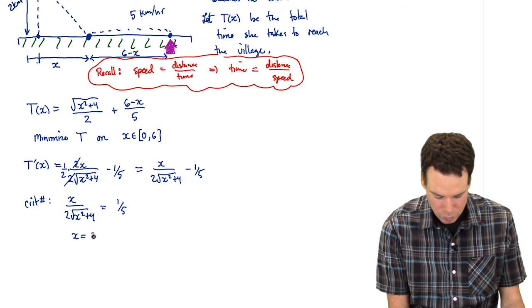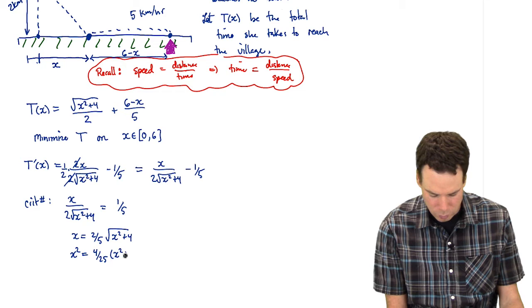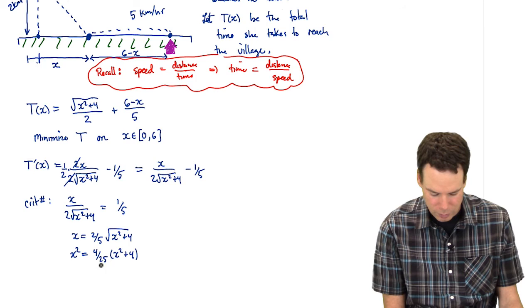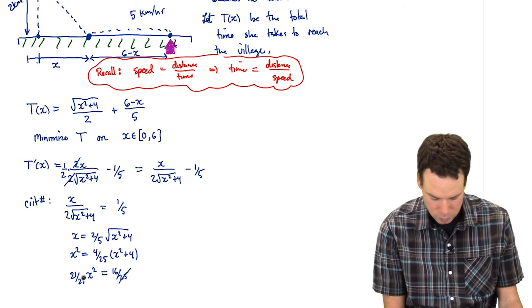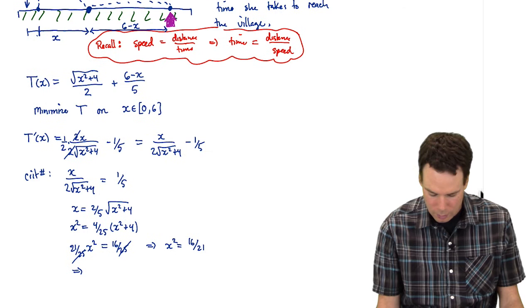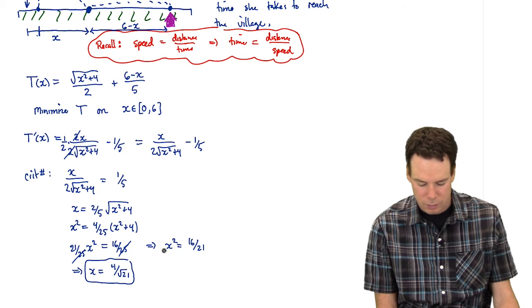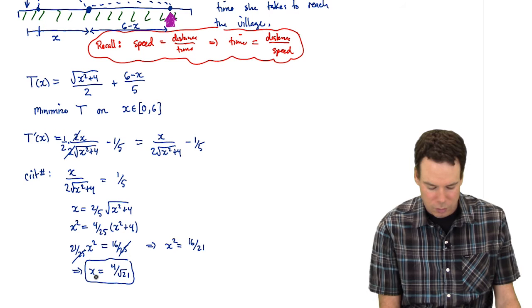So we want x is equal to 2 fifths square root of x squared plus 4. Square both sides just to clear the square roots off. So that's 4 over 25 x squared plus 4. So this would be 4 25ths x squared. I can bring it to the other side to give me 21 25ths x squared is equal to 16 25ths. The 25ths can cancel. And we get then that x squared is equal to 16 over 21. Or in other words, x is equal to 4 over root 21. Notice I didn't keep the negative solution because I'm only interested in the x values on the interval from 0 to 6. So there's our critical number.